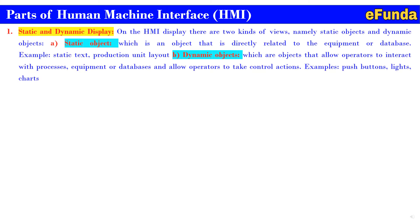Now we will see the details. First, static and dynamic display. On the HMI display there are two kinds of views, namely static objects and dynamic objects. A. Static object: an object that is not directly related to the equipment or the database. Example: static text, production unit layout. B. Dynamic object: objects that allow the operator to interact with the processes, using equipment or a database, and allow the operator to take control action. Example: push buttons, light chart, etc.